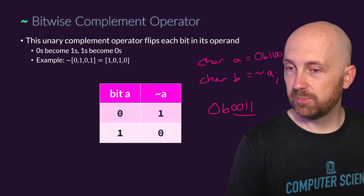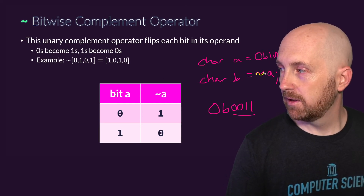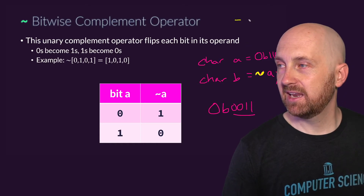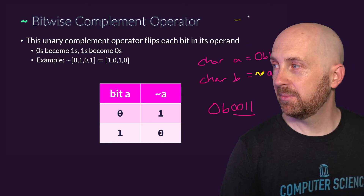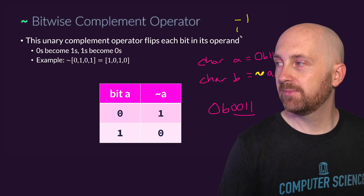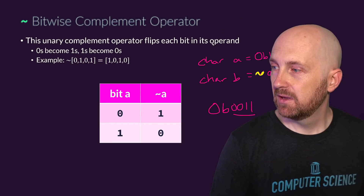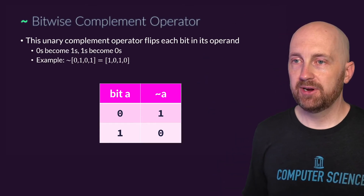Notice you place this operator just before the value you're applying it to. It's very much like the negation operator with a number like negative one, or the NOT operator with a true or false value. That's the unary operator — now let's look at the binary operators.